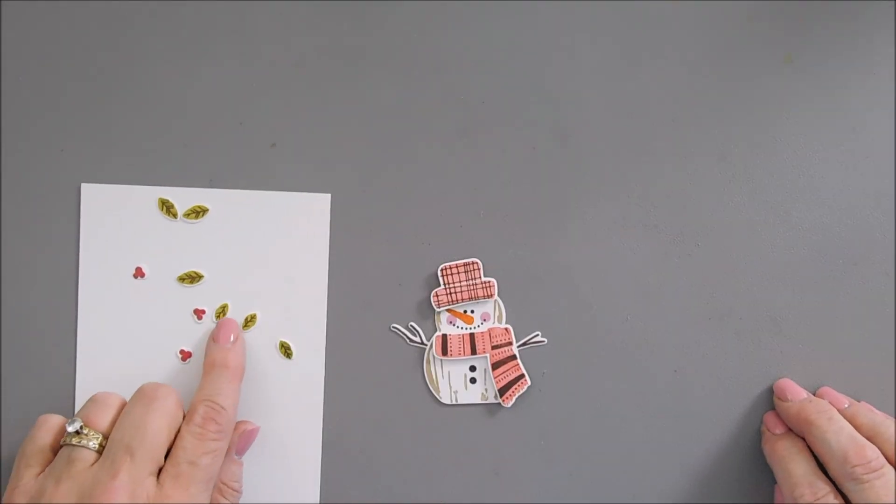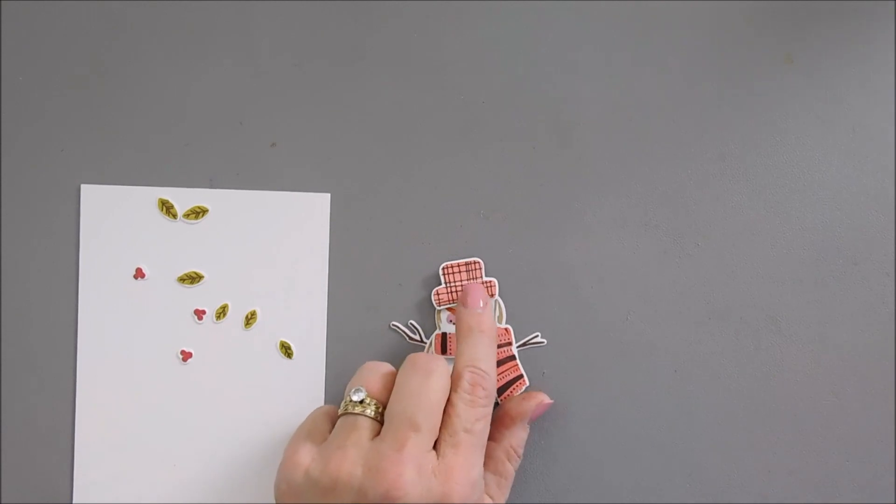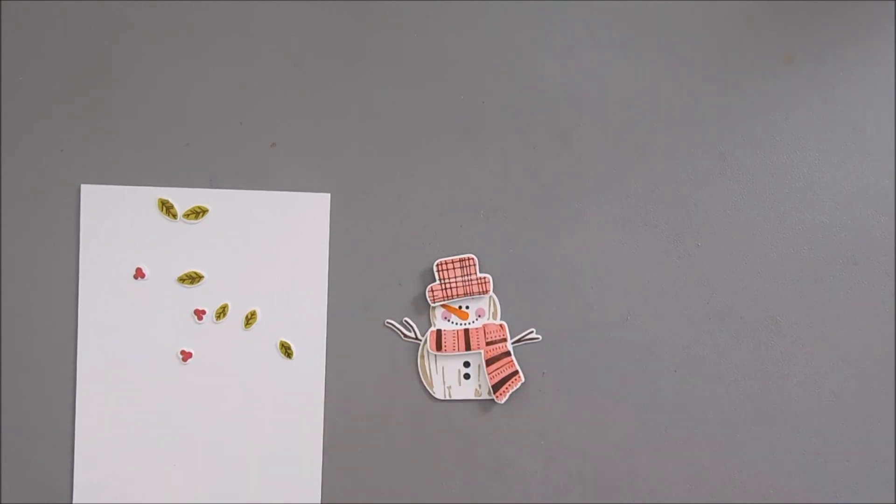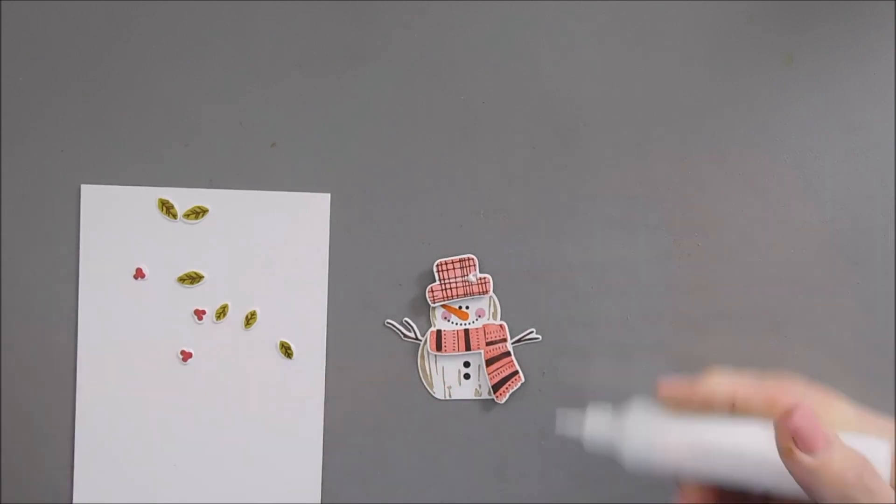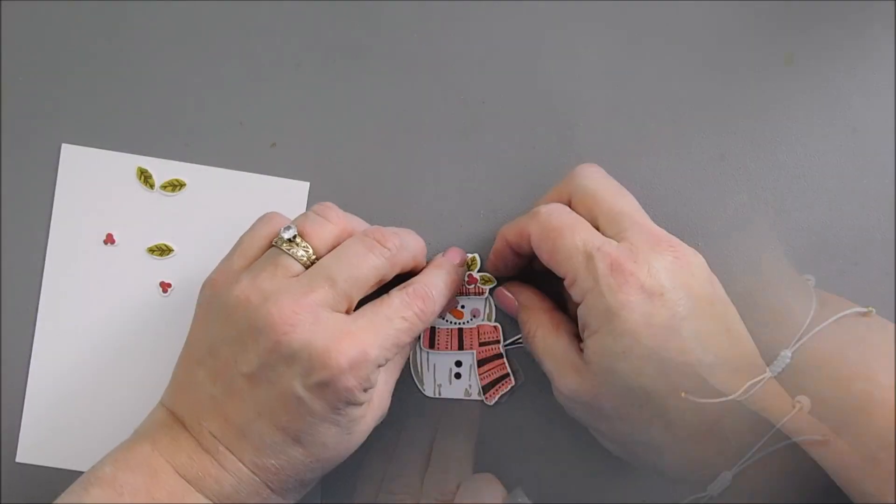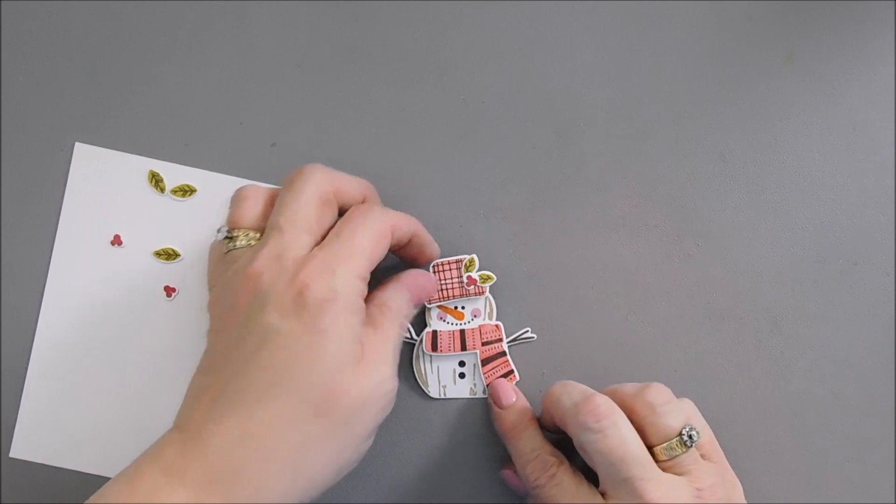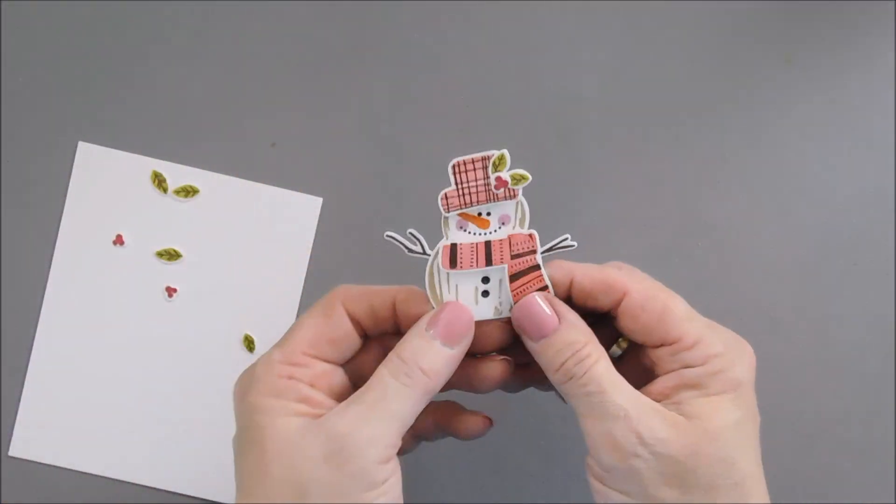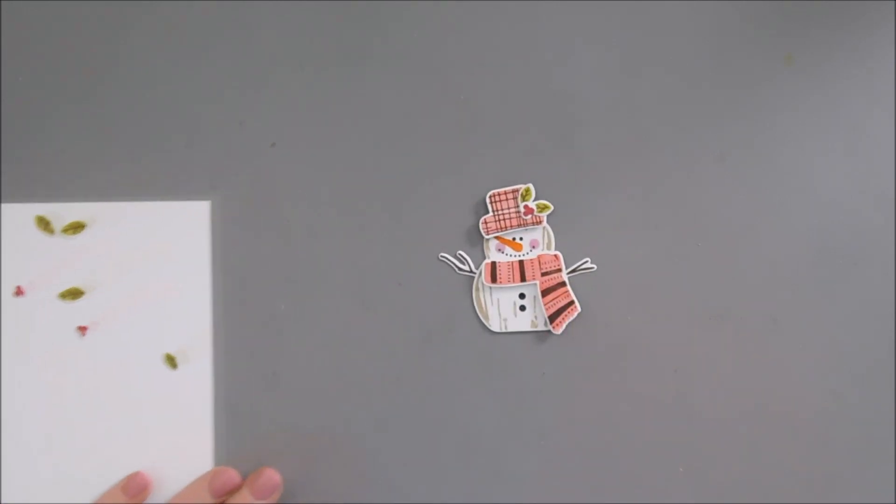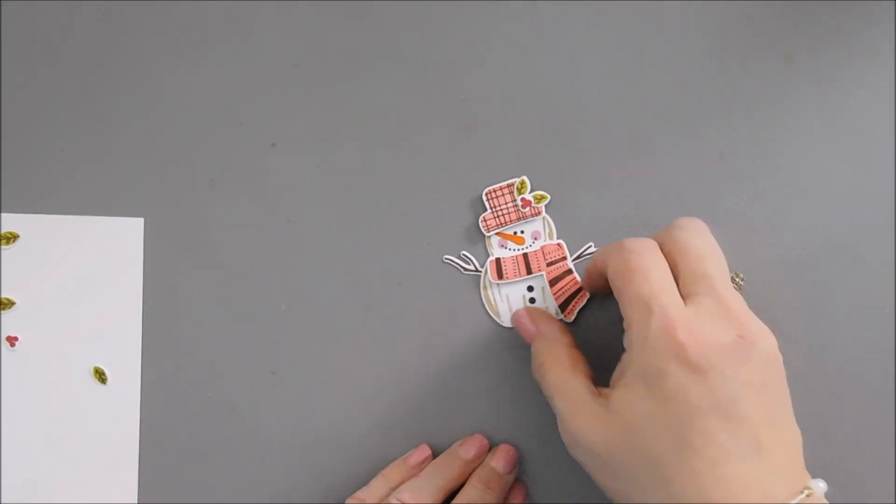Now I do want to add some leaves and berries to our snowman's hat. So I'm going to use glue. I'm just going to add a dot of glue here. That's the best thing about glue, you have a little bit of wiggle room. But isn't he so sweet?